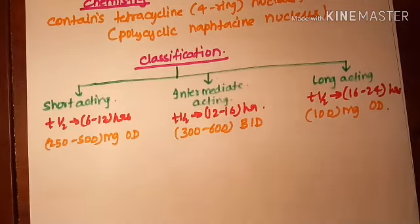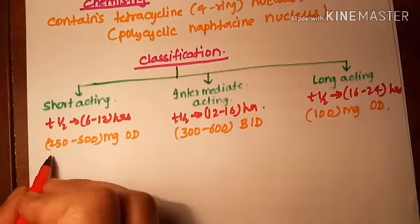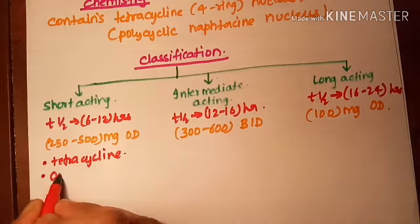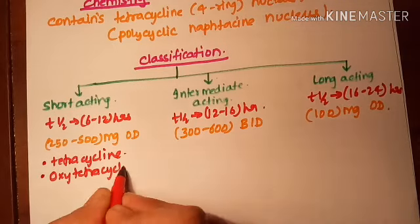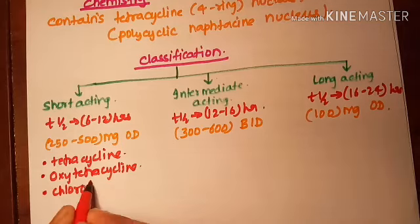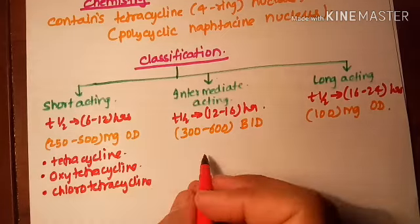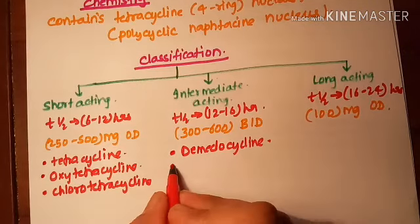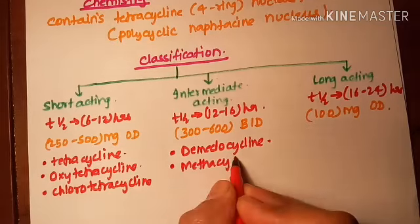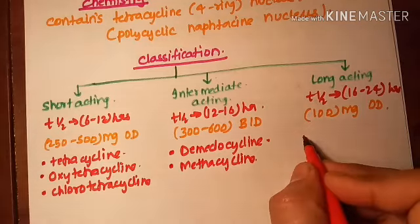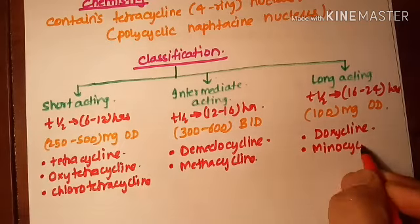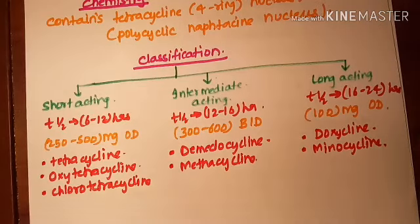Long-acting tetracyclines are given 100 mg once a day. Examples of short-acting tetracyclines are tetracycline, oxytetracycline, and chlorotetracycline. Intermediate-acting examples are demeclocycline and metacycline. Long-acting examples are doxycycline and minocycline.